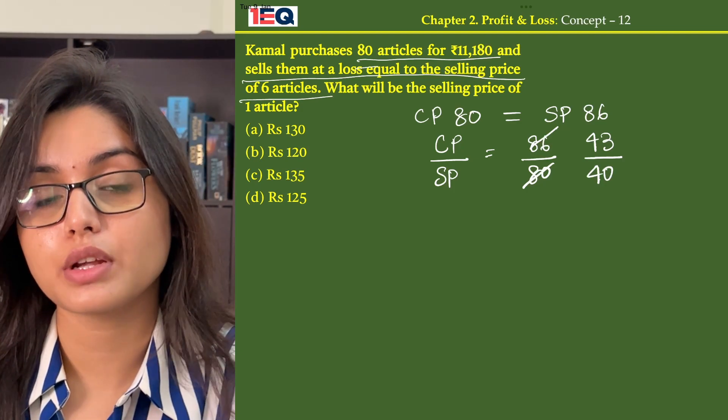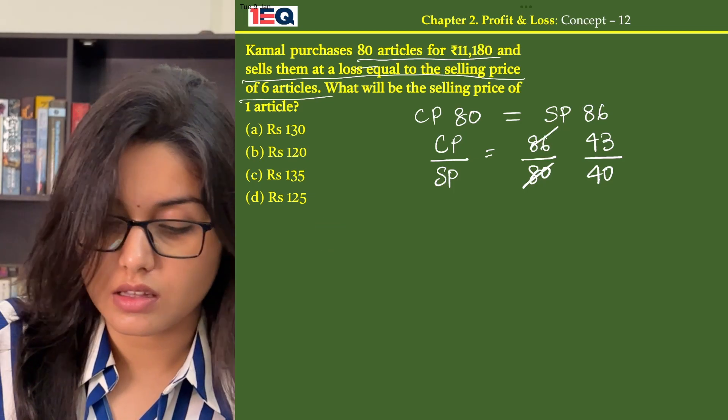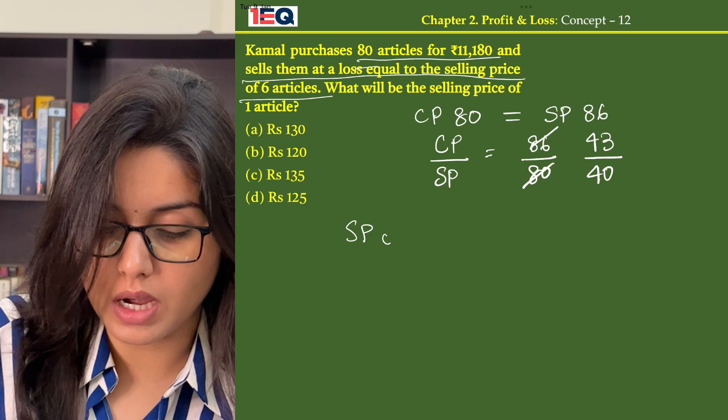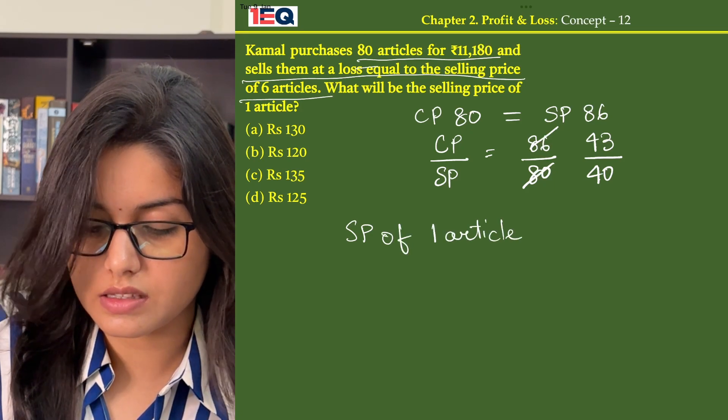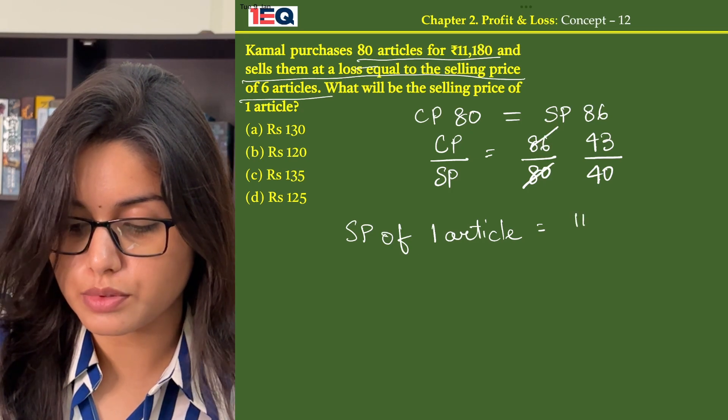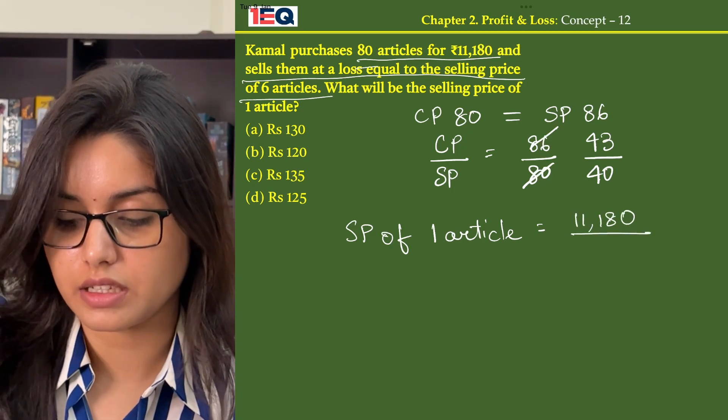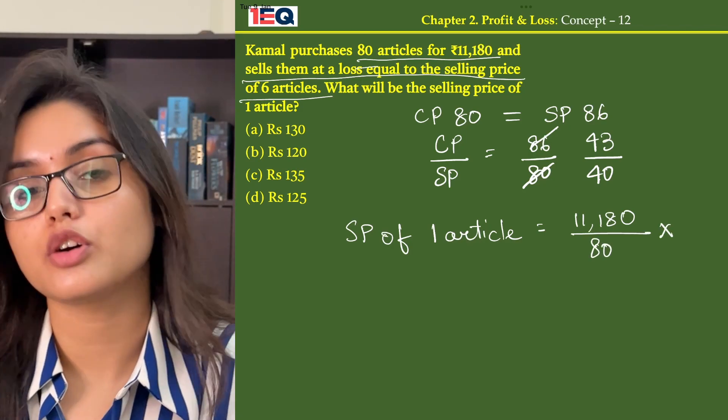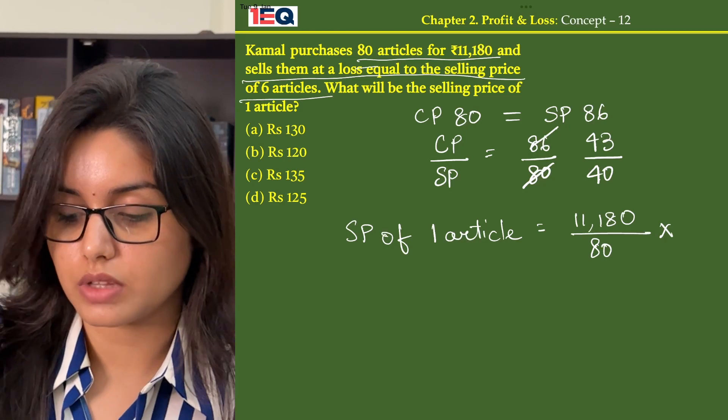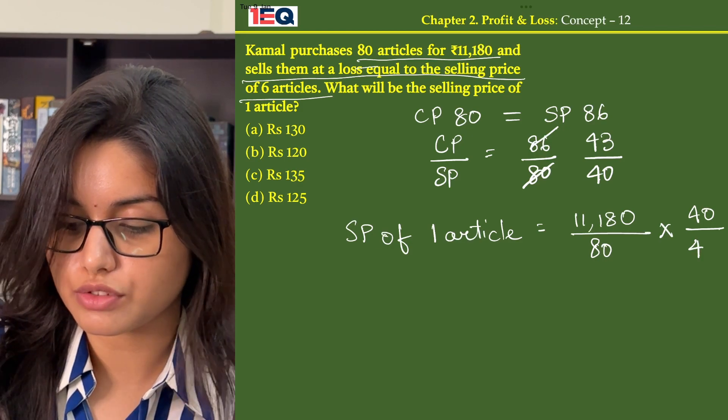Now we have to find the selling price of one article. So the selling price of one article is equal to the cost price of one article, that is 11,180 divided by 80, into the reciprocal of the CP to SP ratio. The reciprocal will be 40 by 43.